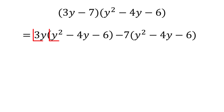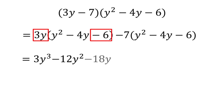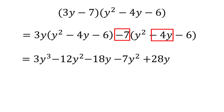3y times y squared is 3y to the third. 3y times negative 4y is negative 12y squared. 3y times negative 6 is negative 18y. Negative 7 times y squared is negative 7y squared. Negative 7 times negative 4y is 28y. Negative 7 times negative 6 is 42.